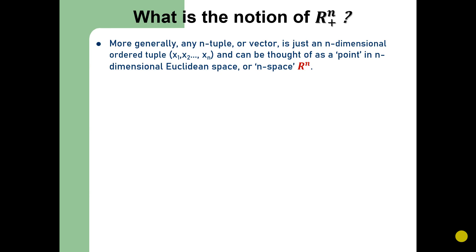More generally, any n-tuple or vector is just an n-dimensional ordered tuple given by (x₁, x₂, ..., xₙ) and can be conceived as a point in n-dimensional Euclidean space or n-space given by R^n. n-space is defined as the set product R^n where R is multiplied n times, which is the set of n-tuples or vectors (x₁, x₂, ..., xₙ) such that xᵢ belongs to R, that is, it's a real number.